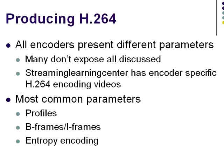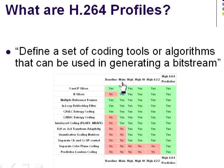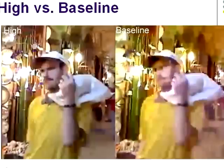Here are the H.264 parameters I'll discuss: profiles, B-frames and I-frames, and entropy encoding. When producing H.264 video, you'll have a number of unique encoding options. First is the choice of profile. Profiles define the types of encoding techniques that can be used to produce the H.264 bitstream. There are multiple profiles, but the three we care most about are the baseline, main, and high profiles. As you can see from this Wikipedia chart, the more advanced the profile, the more techniques it uses to produce the bitstream. The big question is whether these additional techniques produce better quality — and the answer is yes.